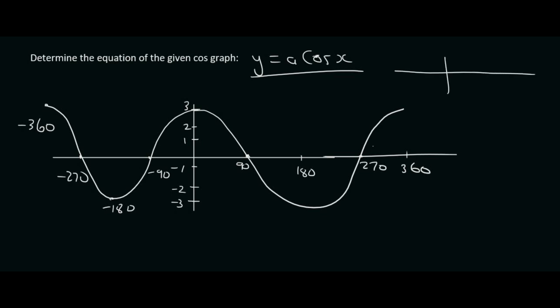We know that a normal cos graph does this. It usually starts at 1 and ends at minus 1. This one starts at 3 and ends at minus 3.